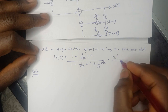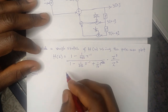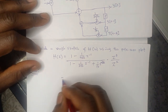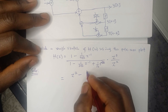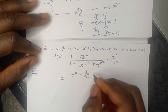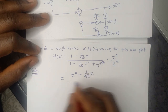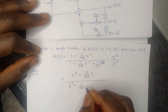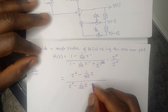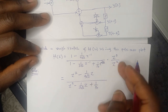We multiply both the numerator and denominator by Z raised to the power +2. When we do that, we get Z² − (1/(4√2))Z all over Z² − (1/(2√2))Z + 1/16.